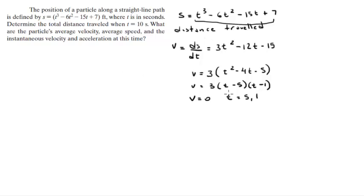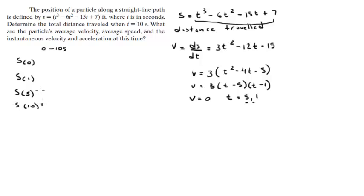Now you can find the total distance traveled because you know when the particle stops. Find s at t = 0 (beginning of interval), s at t = 1, s at t = 5 (both fall within the interval), and s at t = 10. Substituting into the position equation gives: s(0) = 7, s(1) = -13, s(5) = -93, and s(10) = 257.